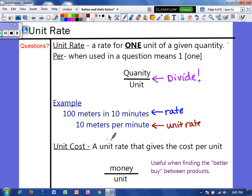Unit cost is similar. That is a unit rate that gives the cost per unit. And in this type of problem, you would just take the money and divide it by the unit. And this is especially useful whenever we're trying to find the better buy, which you will see in example three momentarily.